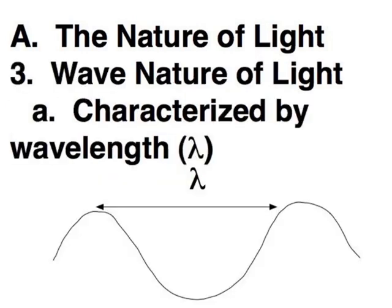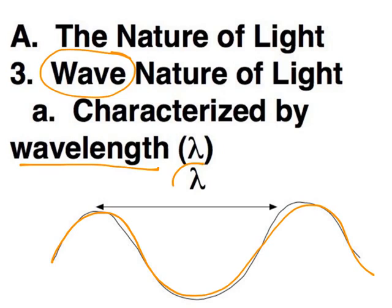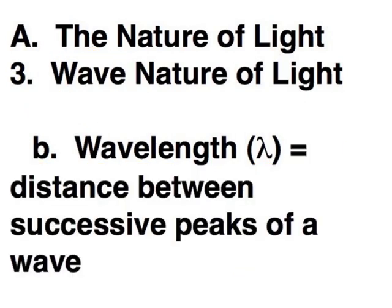When you have light, one way to characterize light is as a wave. So here we have an illustration of a light wave, and the way we characterize that wave is by the wavelength. Our symbol for wavelength is this funky looking thing—it's a Greek letter lambda, looks kind of like an upside down Y. Our definition of wavelength is the distance between successive peaks of a wave.